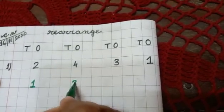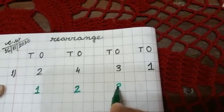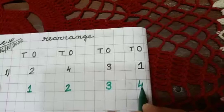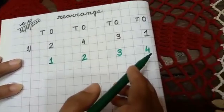2. Then which one will come? 3. Then which one will come? 4. So the number is 1, 2, 3, 4. Okay.